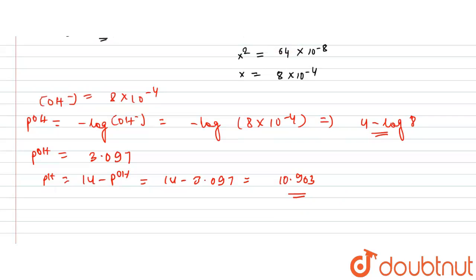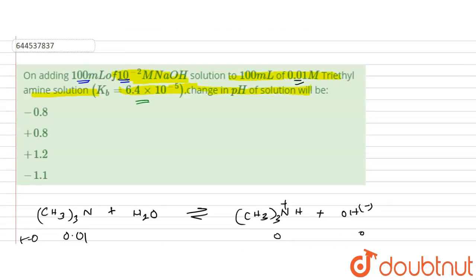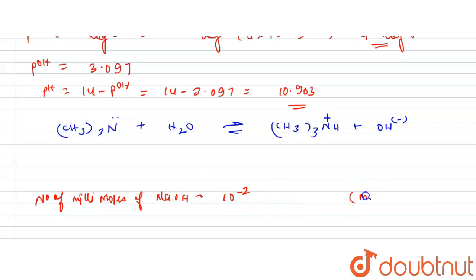Now let's see what happens after addition of NaOH. The reaction is triethylamine reacting with water giving (CH₃)₃NH⁺ and OH⁻. NaOH added is 100 ml of 10⁻² molar. Number of millimoles of NaOH = molarity × volume in ml = 10⁻² × 100 = 1 millimole.